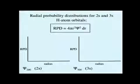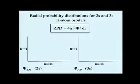We can look at other radial probability distributions of other wave functions that we talked about. We talked about the wave function for a 2s orbital and also for a 3s orbital.